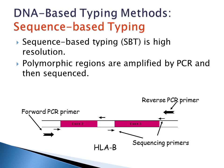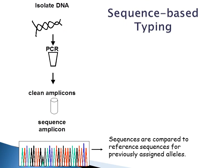You can also do sequence-based typing, which is a very high-resolution method, where polymorphic regions are amplified by polymerase chain reaction and then sequenced using a sequencer to identify the exact nucleotides. In sequence-based typing, you would isolate your DNA, do PCR to amplify the DNA, do a PCR cleanup to get your amplicons and remove all the primers and anything else that might inhibit your reaction, and then sequence your amplified product. These nucleotide sequences are compared to a reference or consensus sequence so that you can see where possible polymorphisms are occurring.